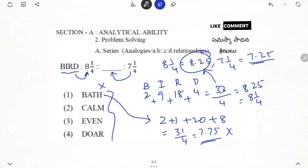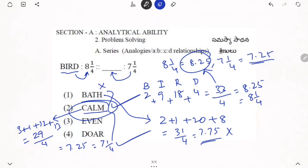Now we will try to take CALM. For CALM, C is 3 plus A is 1 plus L is 12 plus M is 13. Add this thing. 13 plus 12 is 25, 26, 29. So 29 divided by 4 we will get 7.25, that is nothing but equal to 7, 1 by 4. That is what we need. So CALM is the correct answer.